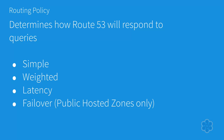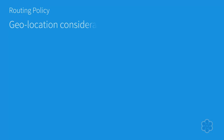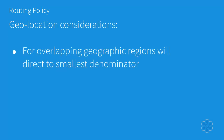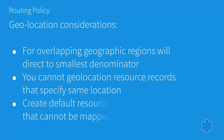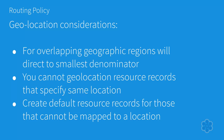Please note that failover routing cannot be configured in a private hosted zone. The geolocation routing policy lets you route traffic based on the geographic location of your users. You can define geographic routing policies based on continent, country, or state in the U.S. For this type of routing, there are a few things to be aware of: first, if you have overlapping geographic regions — for example, continent and country — it will direct to the smallest denominator, which in this case would be country. Second, you cannot create two geolocation resource record sets that specify the same geographic location. Third, this works by mapping IP addresses to geographic locations, and if you create a geolocation policy and don't create a default resource record set, those IP addresses that can't be mapped to a specified location will return a no answer.